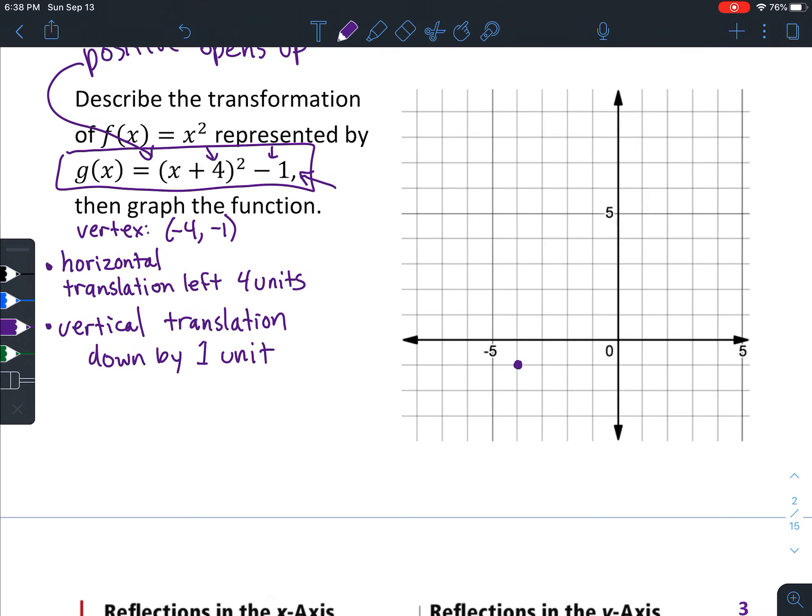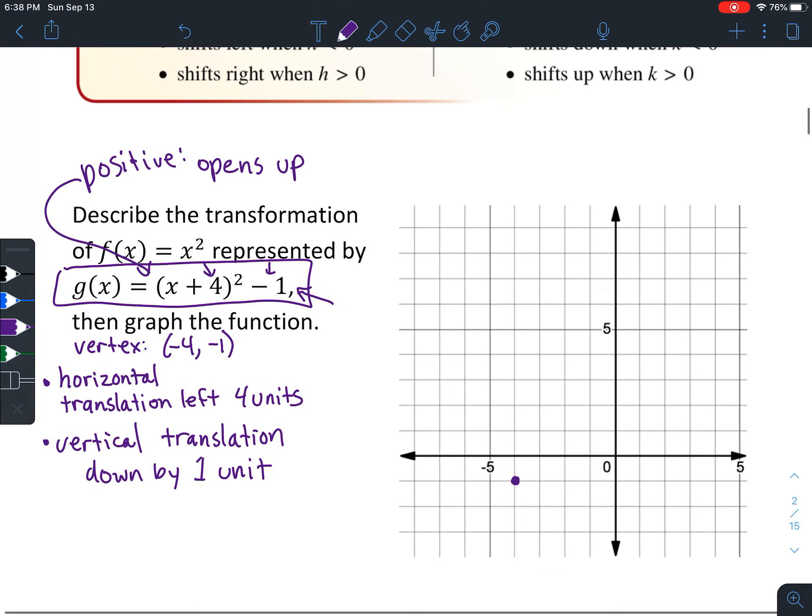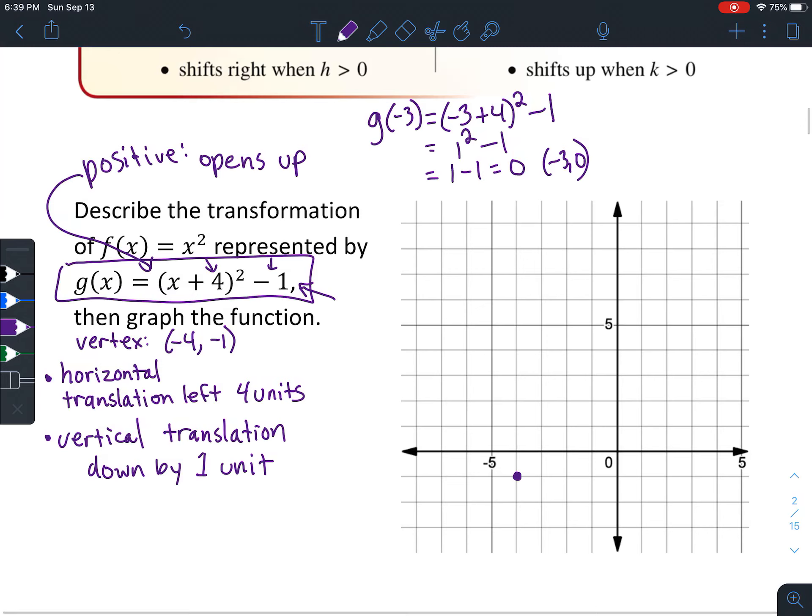So for input, let's go ahead and write g(-3). That shows you what you're putting in for the input. Then you're going to recopy the equation with negative 3 in there. Negative 3 plus 4 is 1. 1 squared is 1. 1 minus 1 is 0. So that means our point is (-3, 0).